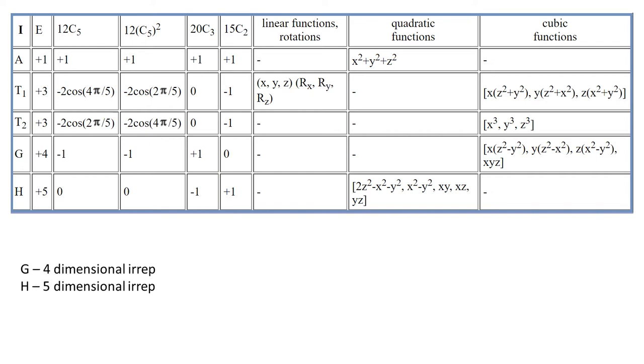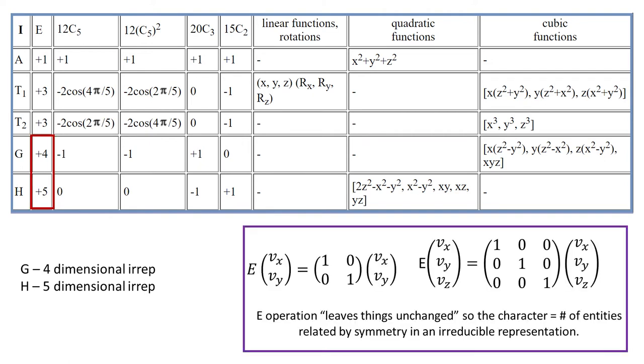So G is four-dimensional and H is five-dimensional. How do we know that? Well dimensionality can be seen under E operation, because E operation does nothing, so the character is equal to the number of entities related by symmetry.